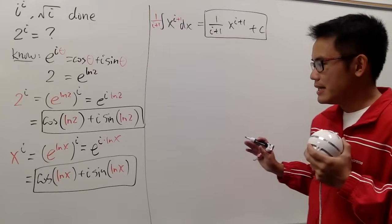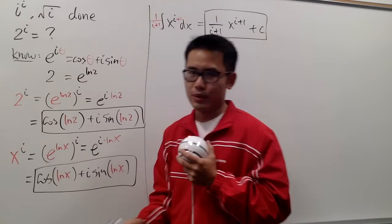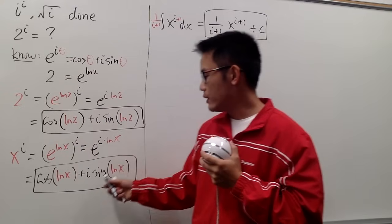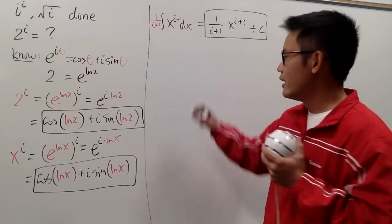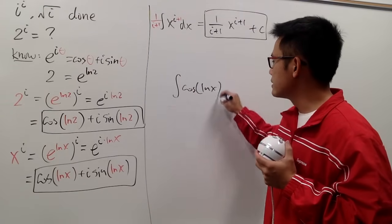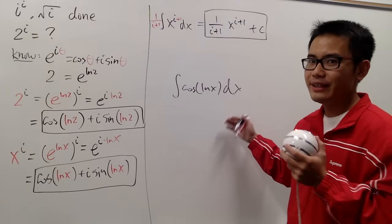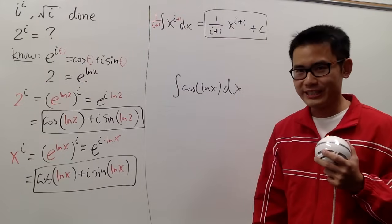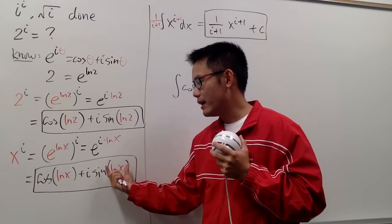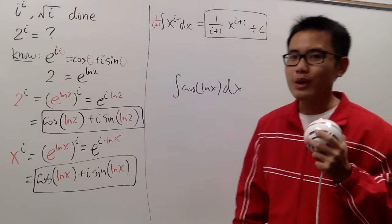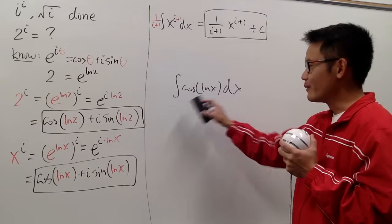Yes. Take a look at what x to the i power is — it's pretty much cosine of ln x, and we also have another part: i sine of ln x. Have you ever encountered the integral of cosine of ln x? Normally you'd let u equal ln x, do u-substitution, and then integration by parts. But today I'll show how we can handle this integral and, in fact, another one — the integral of sine of ln x — and kill two birds with one stone.